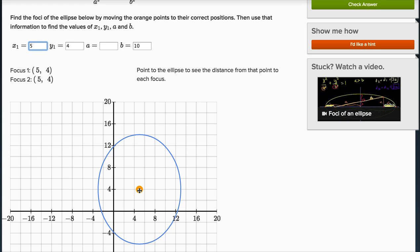So once again, where I put this orange dot, that is the center of the ellipse. It said x equals 5, y equals 4. And that's why I put x equals 5, or x1 equals 5, y1 equals 4.